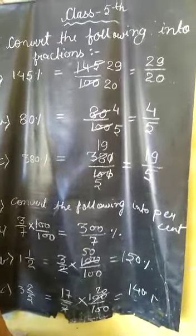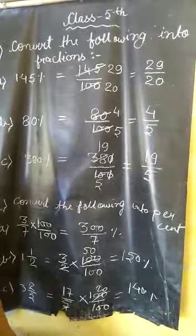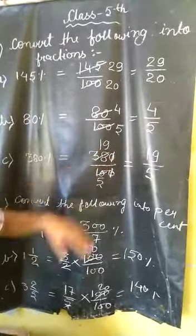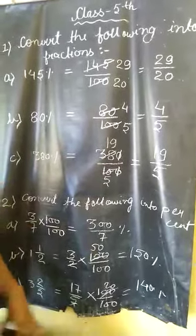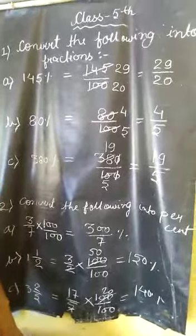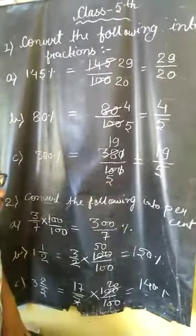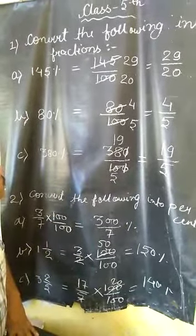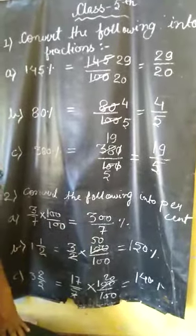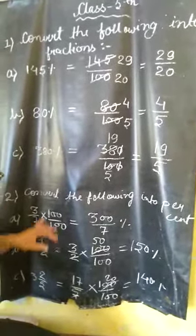Then we find the GCF of both, 38 and 10. It will be 2. So we divide by 2. We get 19, and then we divide 10 by 2, we get 5. So 19 upon 5 will be our simplest form of 380%.